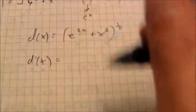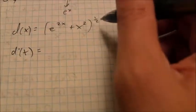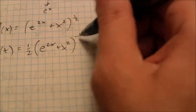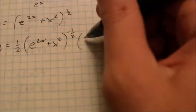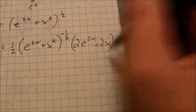d prime of x is equal to, I need to follow the power rule here. I'm going to have one-half inside function. Does not change. And remember you drop your power by one. So it's going to be to the negative one-half power times the derivative of the inside function. Which in this case is going to be 2 e to the 2x plus 2x.